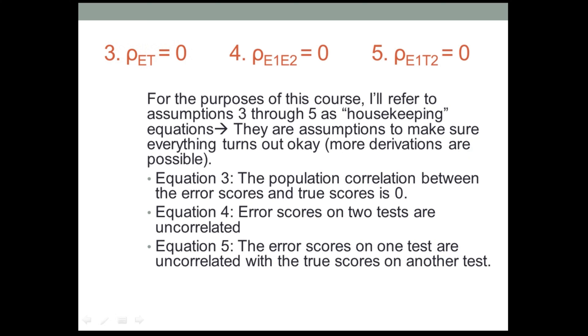Now, I'm going to deal with the last three as a group. They state, number three states, that the population correlation between an error score and a true score is zero. Number four states that the population correlation between an error score on one test and an error score on a second test is zero. And assumption five is that the population correlation between error scores on one test and true scores on a second test are zero.